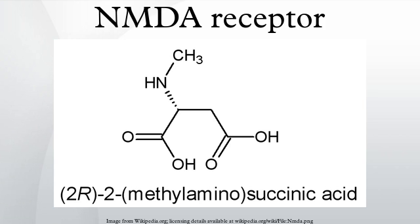NR2B to NR2C switch: granule cell precursors of the cerebellum, after undergoing symmetric cell division in the external granule cell layer, migrate into the internal granule cell layer where they downregulate NR2B and activate NR2C, a process that is independent of neuregulin beta signaling through ERBB2 and ERBB4 receptors.